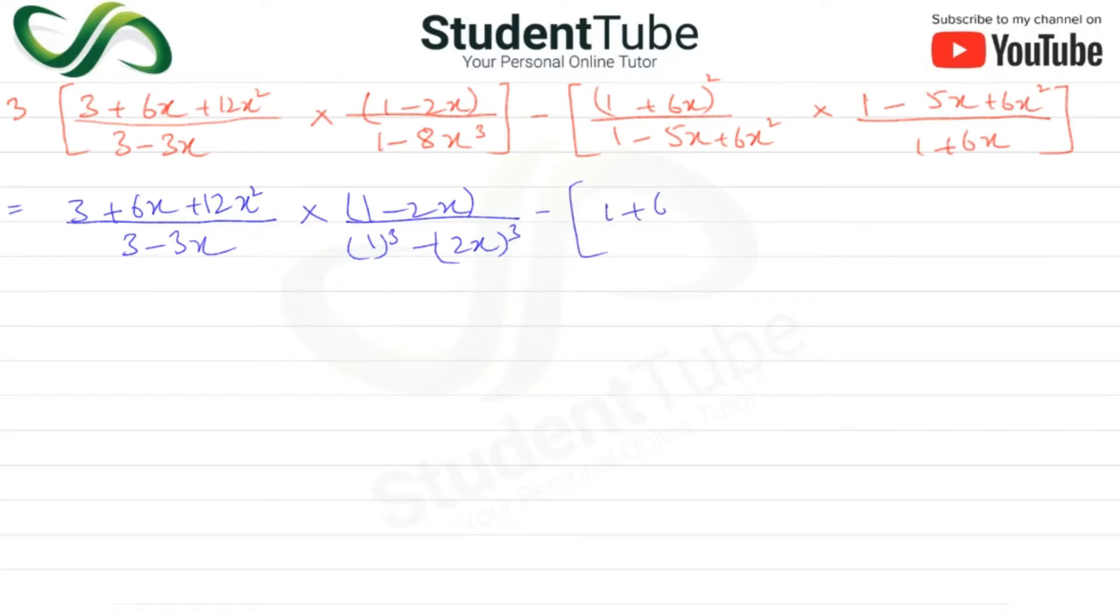Then minus here, so 1 plus 6x squared. Then 1 minus 5x plus 6x squared multiplied by 1 minus 5x plus 6x squared upon 1 plus 6x.